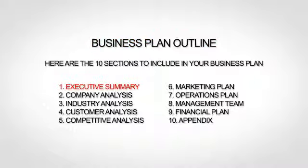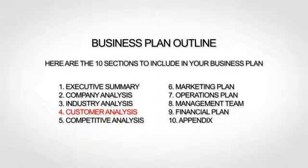The first section is your executive summary, which is essentially the introduction to your business plan. The next section is your company analysis, which gives a little more background. Next up is your industry analysis, where you talk about your market and trends. The fourth section is your customer analysis, where you go more in depth about your target market. The fifth section is your competitive analysis, where you provide an analysis of your competition, including what differentiates you from your competitors.